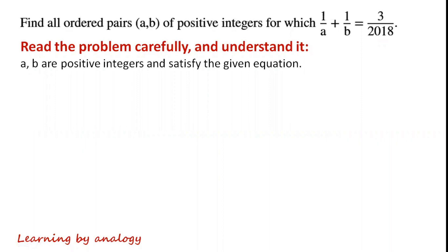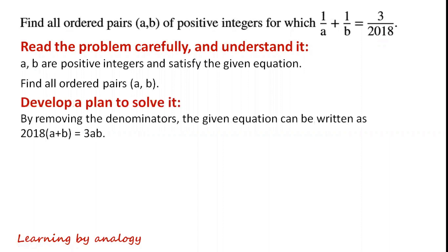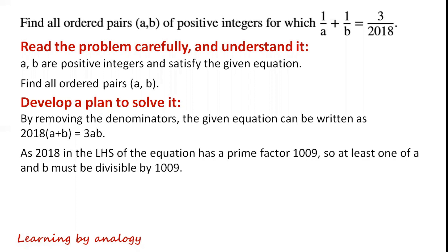A, B are positive integers and satisfy the given equation. Find all ordered pairs A, B. By removing the denominators, the given equation can be written as 2018 times (A + B) equals 3AB.